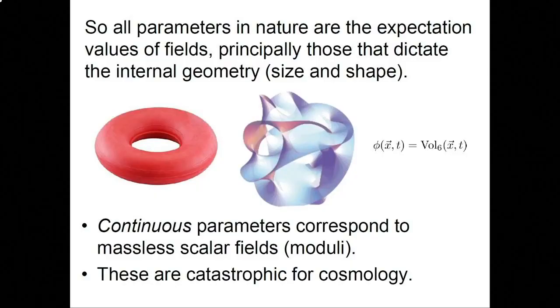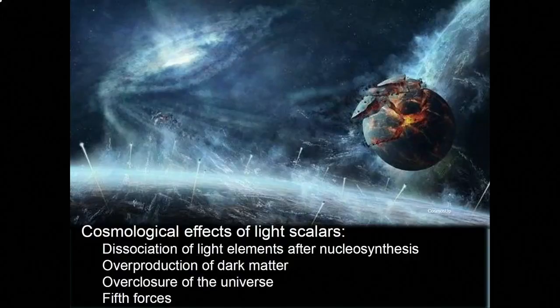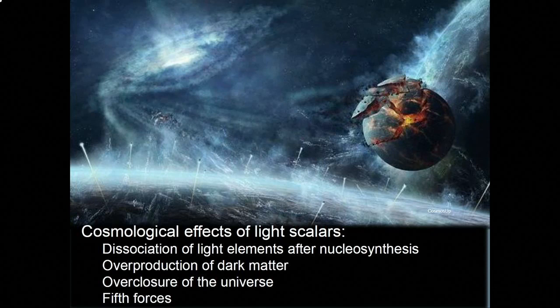Now, continuously variable parameters, parameters that you can adjust with no energy cost. So, imagine you can change the size of this thing without changing the energy. Those things correspond to scalar fields in our four-dimensional theory, scalar fields with zero mass. The name for a massless scalar field is a modulus. The moduli fields, massless scalar fields, are catastrophic in cosmology. If you have moduli, everything goes wrong. The light elements that are formed in Big Bang nuclear synthesis in the first few minutes, can be destroyed by decays of the moduli. The moduli can cause too much dark matter to appear, they can cause the universe to re-collapse. Perhaps simplest to understand, they can cause fifth forces.